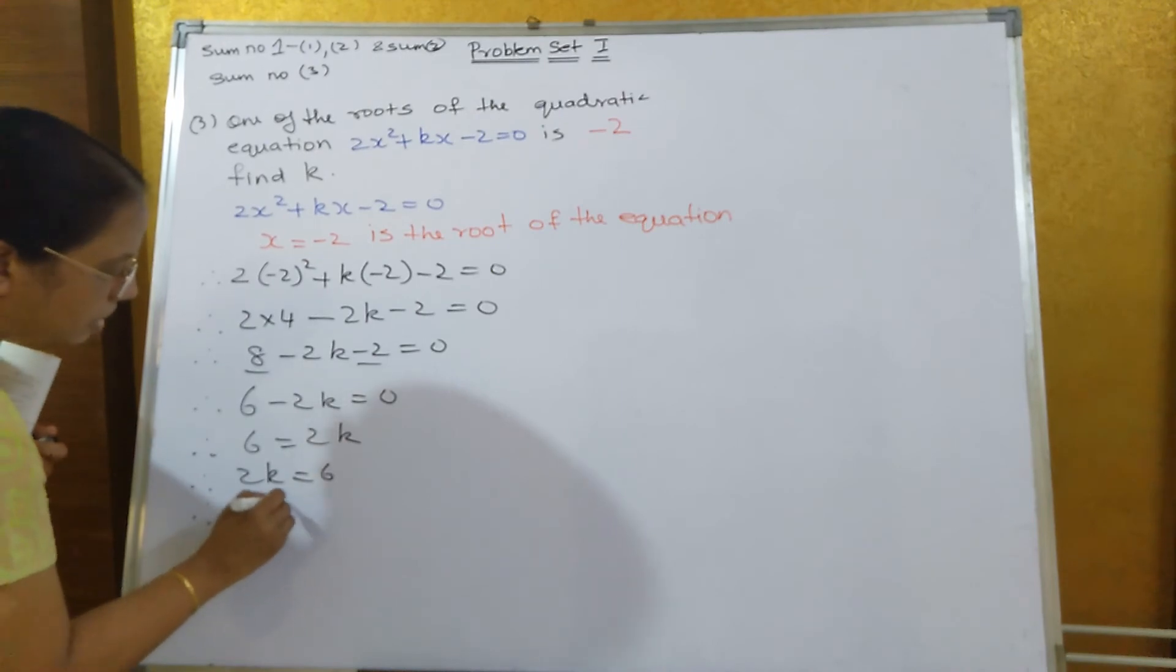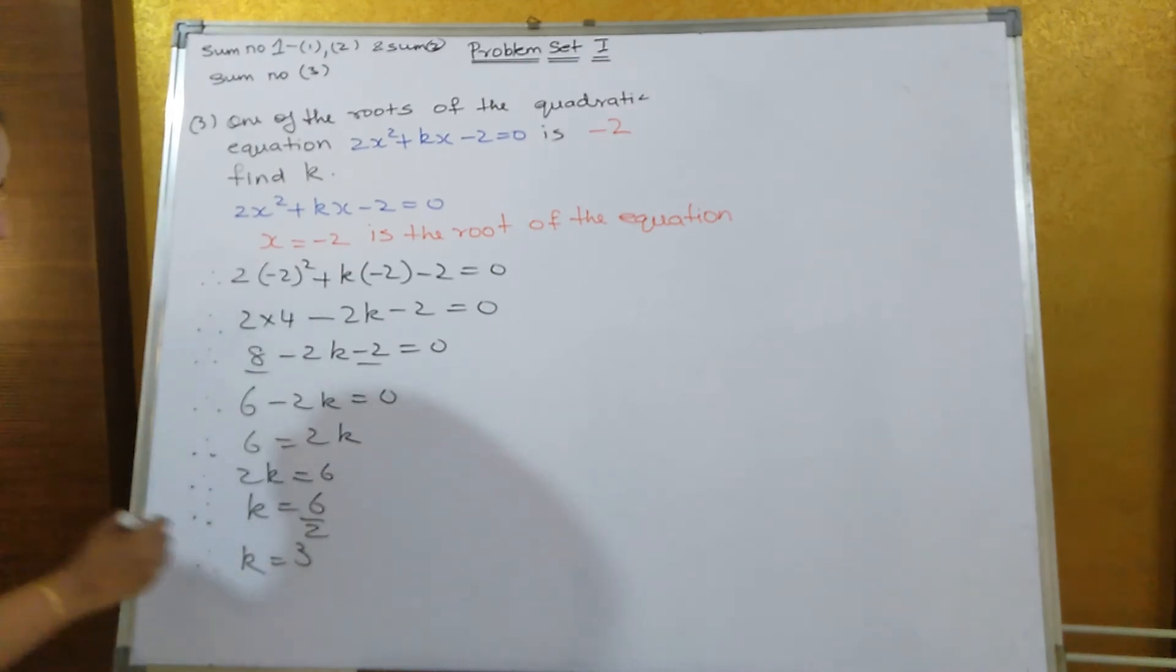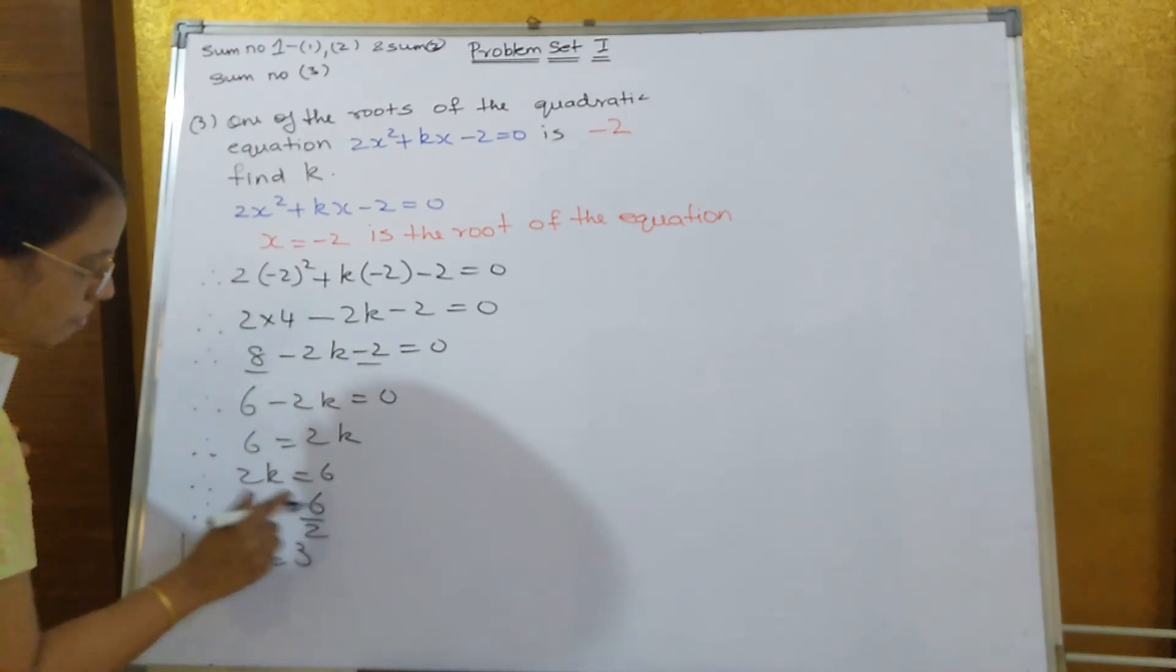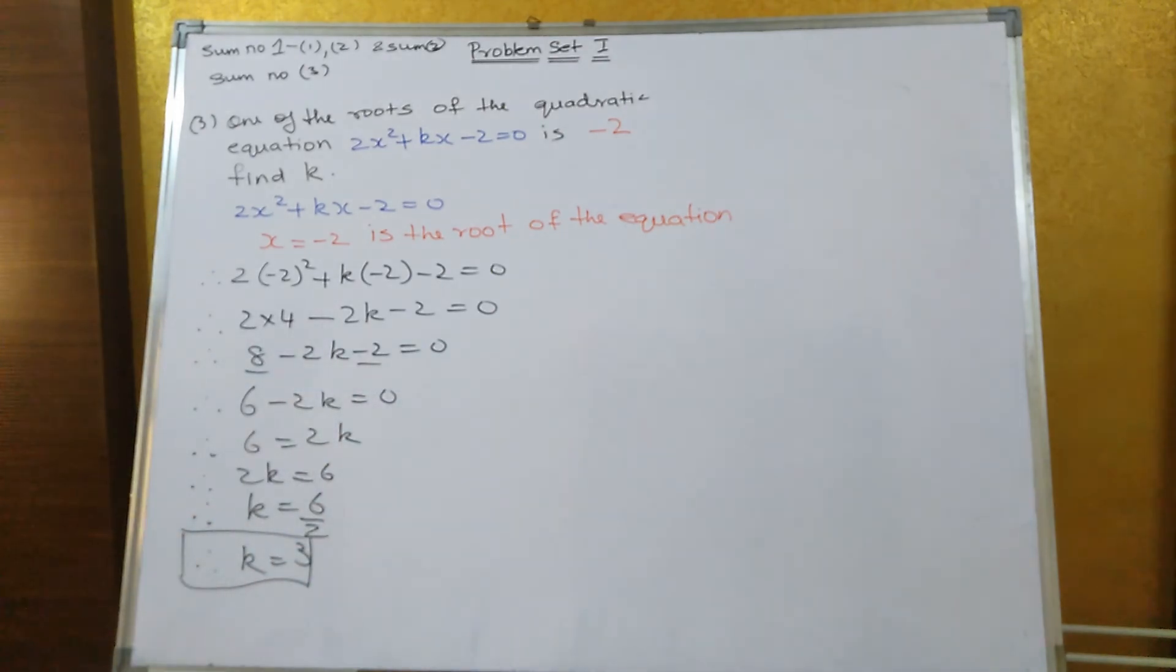Therefore, k equals 6 upon 2. k is equal to how much? When you divide 3 by 2, you get how much? 6 by 2, not 3 by 2. When you divide 6 by 2, you get the value of k equal to 3.